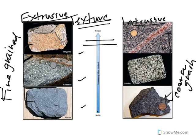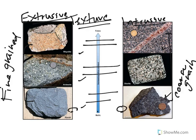That is the only difference between these. Rhyolite is the same as granite. Andesite is the same as diorite. And basalt is the same as gabbro. So just keep in mind that these are technically the same rocks, same mineral composition — the only thing different is where they cool and why their mineral grains physically look different.